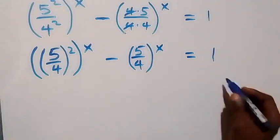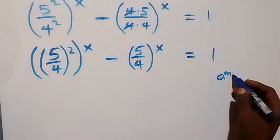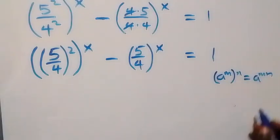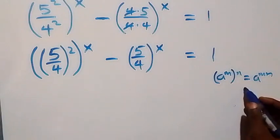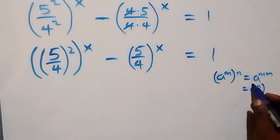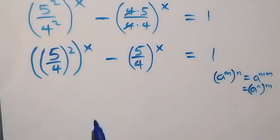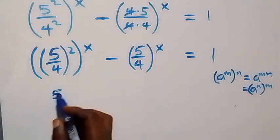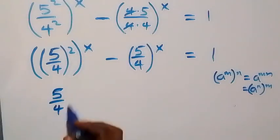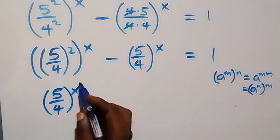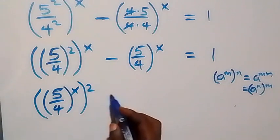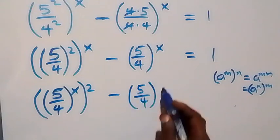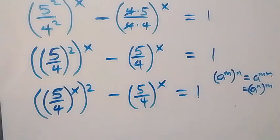From the law of indices, a raised to power m raised to power n is the same as a raised to power mn, and we can also interchange the order. So here we can interchange and write (5/4) raised to power x, all raised to power 2, minus (5/4) raised to power x equals 1.